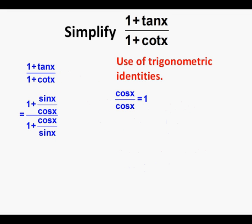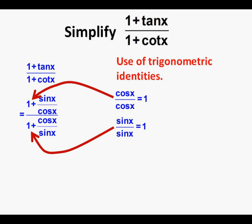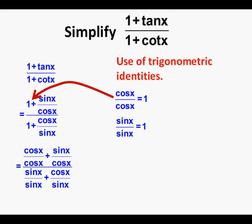Next, we're going to simplify the numerator by creating a common denominator. We'll use our knowledge that anything divided by itself equals 1, and set 1 equal to cosine x over cosine x. We'll then replace 1 with cosine x over cosine x in the numerator. We'll use our knowledge that sine x divided by sine x is also equal to 1, and achieve a common denominator in the denominator by replacing 1 with sine x over sine x.